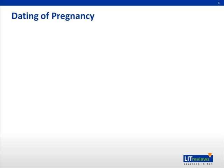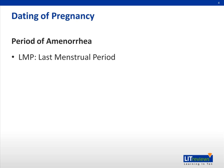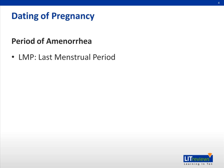Let's move on to the dating of pregnancy, because this is unique in obstetrics — when a pregnant person presents to you, the first thing you would want to know is how far pregnant this particular person is. This can be done in two ways: one, from the period of amenorrhea using the first day of her last menstrual period, or by using an ultrasound scan. When using her period of amenorrhea, you can calculate the expected date of delivery by adding 9 months and 7 days, which is the Naegele's rule, or you could use the pregnancy calculator wheel.